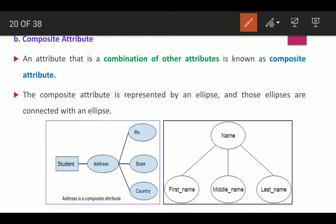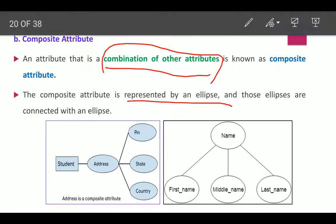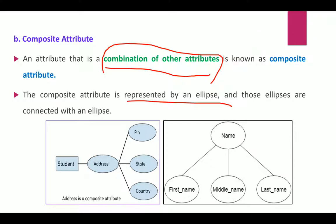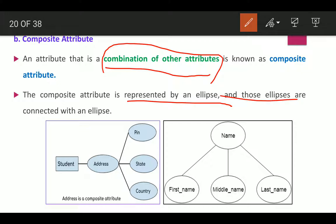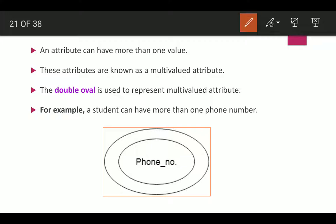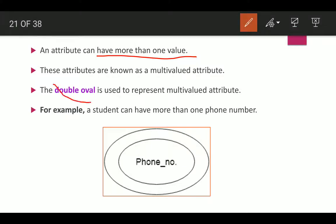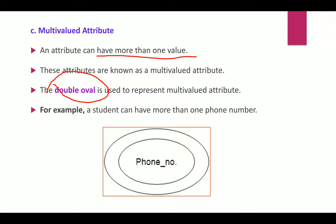A composite attribute is a combination of other attributes, represented by an ellipse. For example, the attribute 'name' can be subdivided into first name, middle name, and last name. Similarly, 'address' can be subdivided into pin code, state, and country. A multi-valued attribute is one that can have more than one value, represented by a double oval. For example, a student can have more than one phone number.